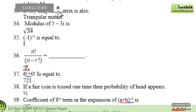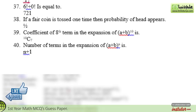The thirty-seventh statement is: 6! plus 0! equals — the correct option is 721. The thirty-eighth statement is: if a fair coin is tossed one time, then the probability of a head appearing — the correct option is 1/2. The thirty-ninth statement is: the coefficient of a term in the expansion of (a+b)^10 — the correct option is ¹⁰C₇. The fortieth and last statement is: the number of terms in the expansion of (a+b)^n — the correct option is n+1.